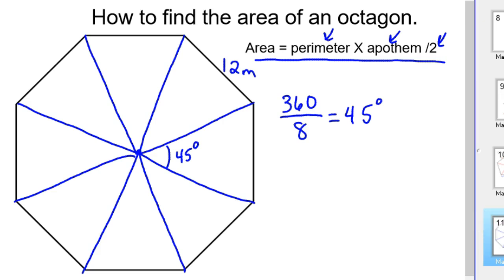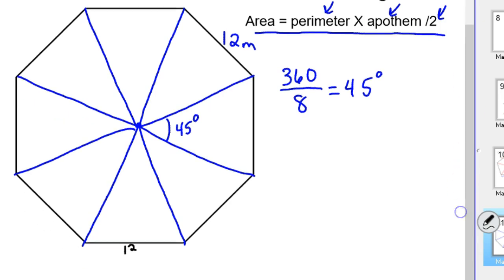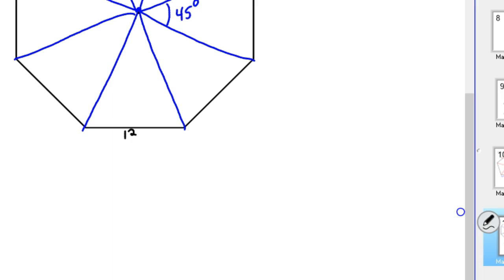Now once you know that, I'll just find the area of this bottom triangle. Well, we know the base is 12. Let's give myself some room here. So the base is 12, let's go ahead and split it. There's your height. That means this part is 6. We split a 45 degree angle, now this is 22.5 degrees.